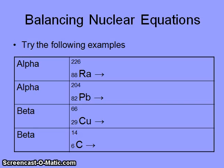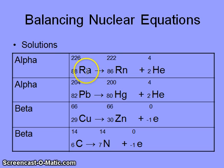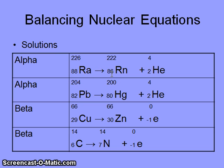Here are some examples of nuclear equations. Please pause playback and try to balance them. In the first example, radium-88 with a mass of 226 undergoes alpha decay, producing an alpha particle — a helium nucleus. We subtract 4 from 226 to get 222, and subtract 2 from 88 to get 86. Looking up element 86 on the periodic table gives us radon.